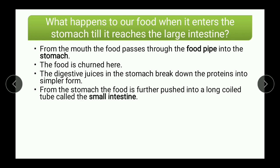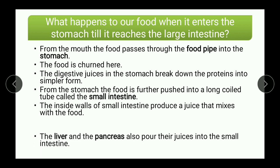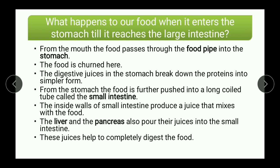From the stomach the food is further pushed into a long coiled tube called the small intestine. The inside walls of the small intestine produce a juice that mixes with the food. The liver and pancreas also pour their juices into the small intestine, and these juices help to completely digest the food.